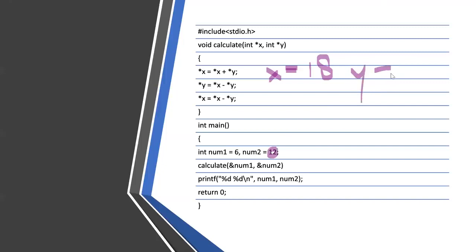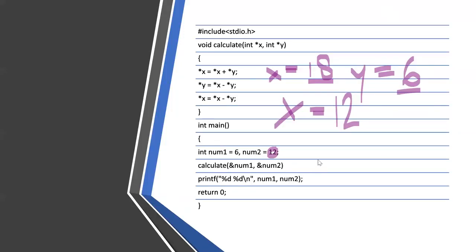Next, x = x - y. The latest value of x is 18 and the latest value of y is 6, so x = 18 - 6 = 12. Initially x was 6 and y was 12, so the values are swapped — 6 and 12 have become 12 and 6. The output is 12 space 6.